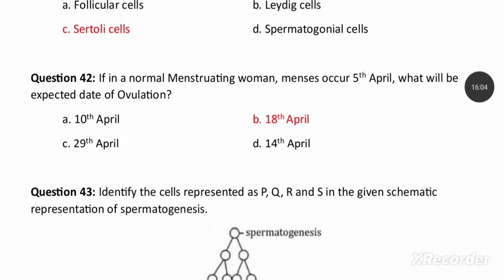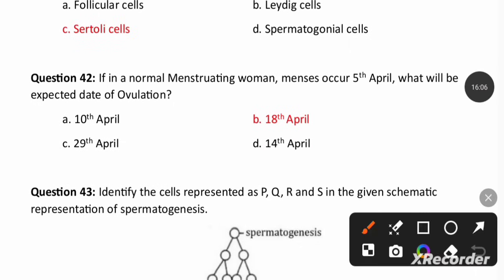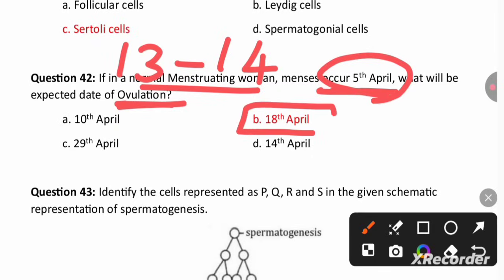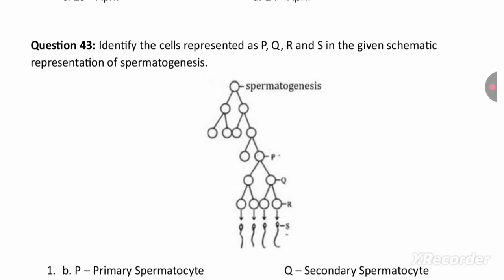If a normal menstruating woman has menses on 5th April, what will be the expected ovulation? Ovulation occurs at the 13th to 14th day of the menstrual cycle. Adding this to 5th April, ovulation can happen around 18th April.